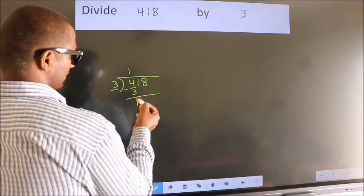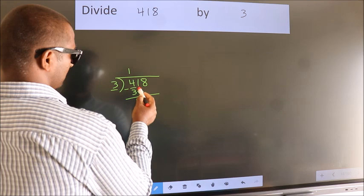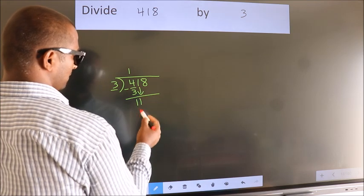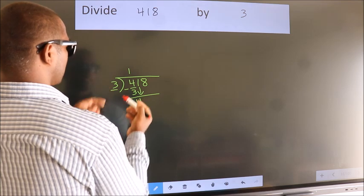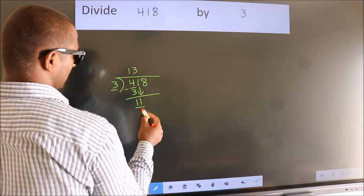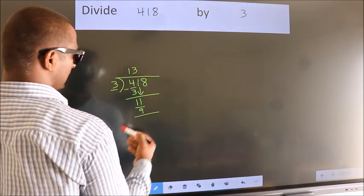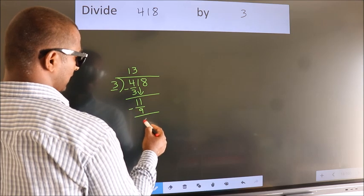After this, bring down the beside number. So, 1 down. So, 11. A number close to 11 in the 3 table is 3 threes, which is 9. Now we subtract. We get 2.